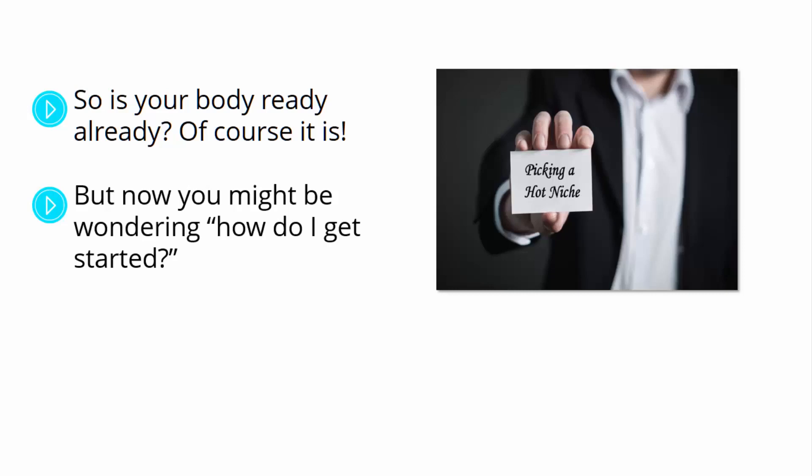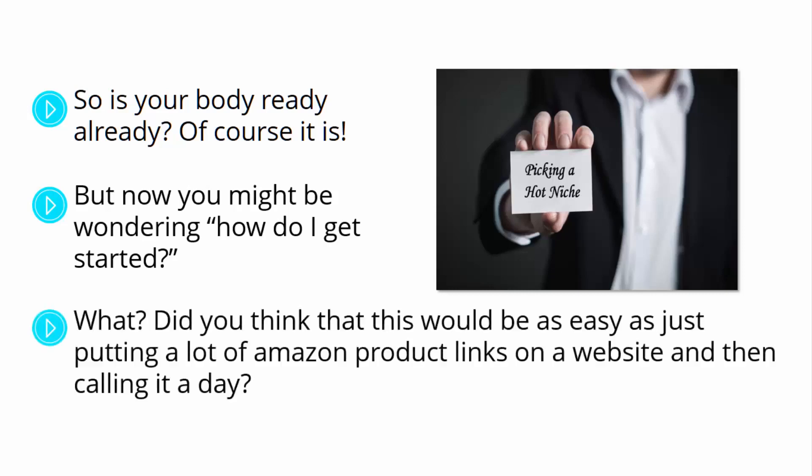As with everything good and profitable in life, you need to start in incremental steps. And you have to start by thinking about what you're going to promote in order to make some good money as an Amazon affiliate. Did you think that this would be as easy as just putting a lot of Amazon product links in a website and then calling it a day? Well, good luck with that. Because the first step into becoming a successful affiliate is finding out the type of niche products that are going to make you the most money as an affiliate.